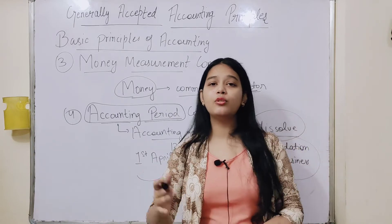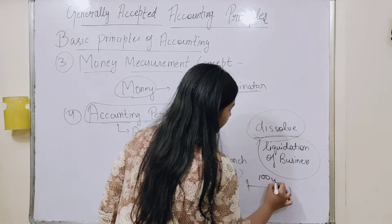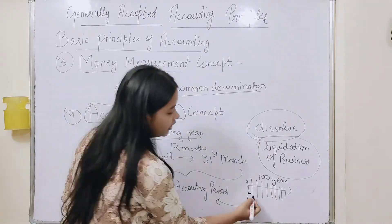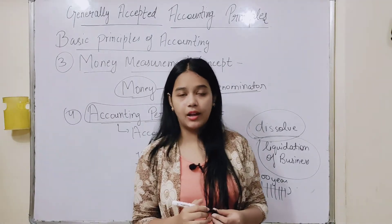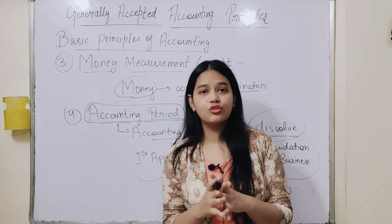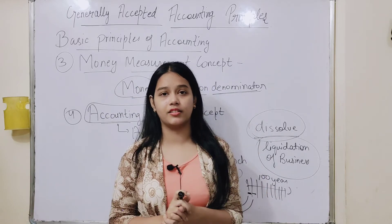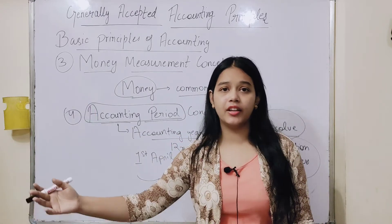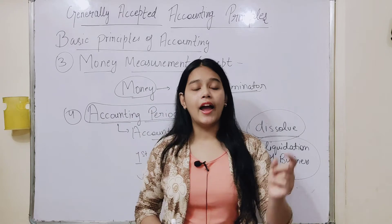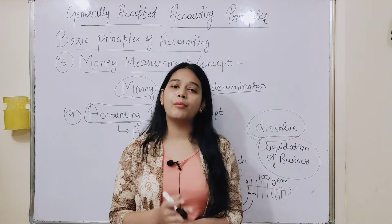So we have broken the entire business life cycle into different sections — into one-year periods, called accounting years. Since we assumed the business will go for 100 years, we divide it into 1-year periods. Each year is one accounting year, and we check profit and loss and the financial position. We provide the information to the users who need it. This period starts from 1st April to 31st March, and on the last day — 31st March — we calculate our profit and loss and all these things.